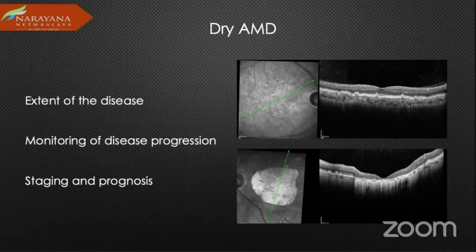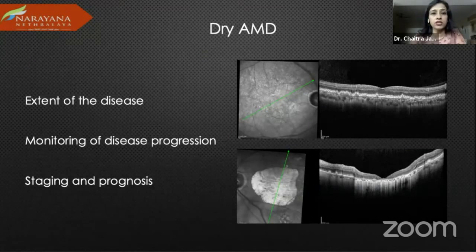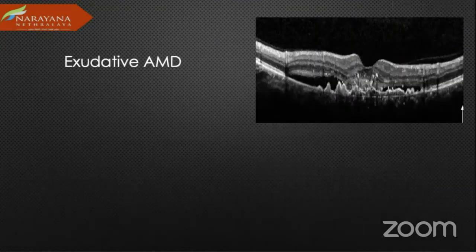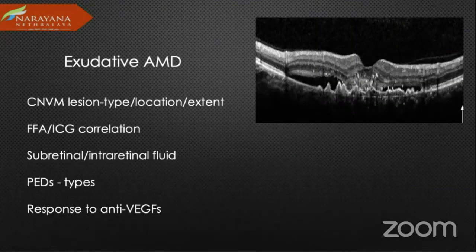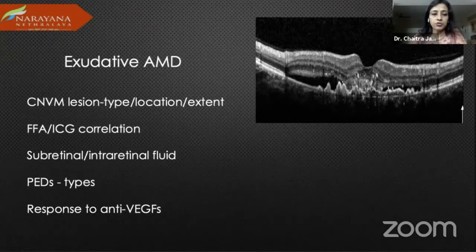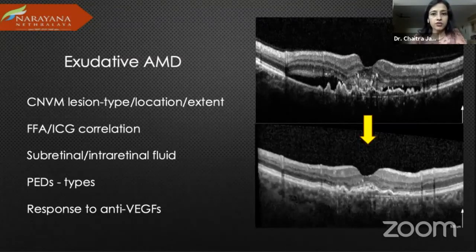For AMD, it is a very useful tool — we are basing a lot of our treatment solely on OCT. In dry AMD, monitoring disease progression is very important, especially for patients with geographic atrophy where even a small island of vision matters. Exudative AMD can show us the type of CNVM and which layer it lies in. FFA-ICG correlation is also possible, and you want to look at intra- and subretinal fluid, the types of PED, and response to anti-VEGF — where post-injection resolution is very good.